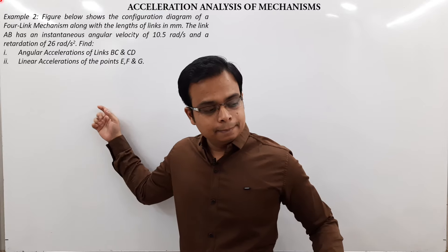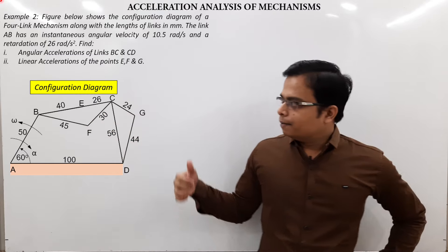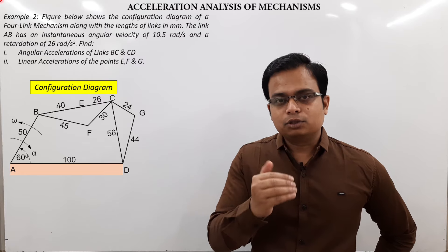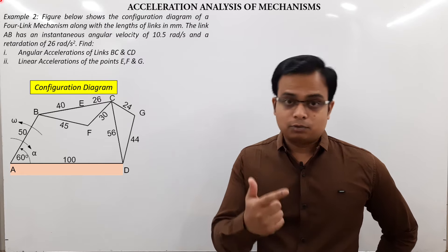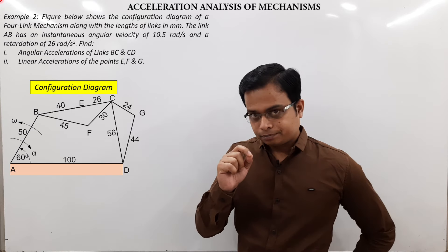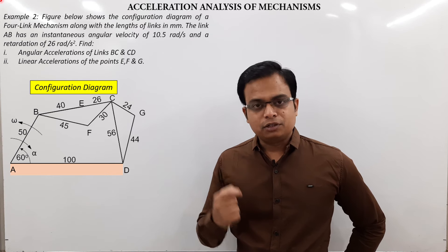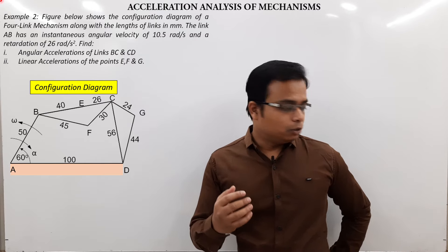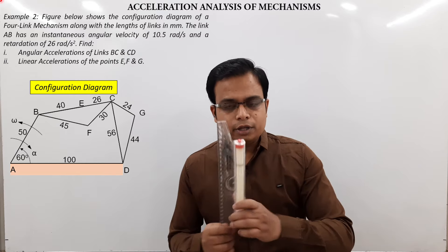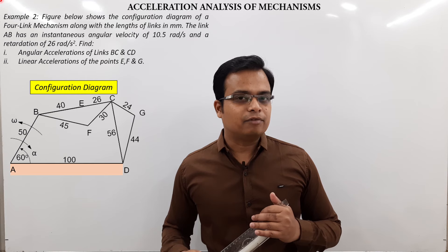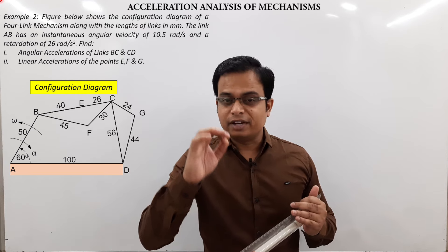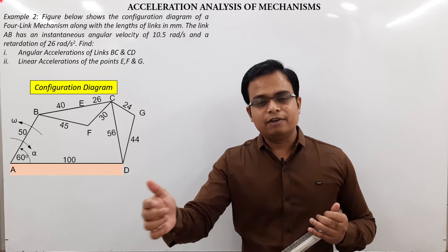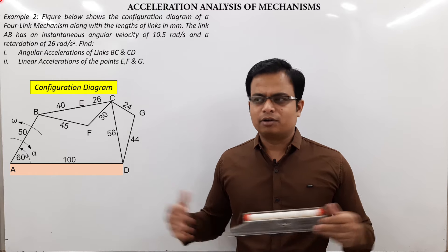The problem is based on a four-bar mechanism. Just take a look at this configuration diagram. For this configuration, we have already made the velocity diagram. If you haven't seen my videos on the relative velocity method, you must watch them. You'll need a piece of paper, pencil or pen, a compass, a protractor, and a roller scale or mini-drafter. It's going to be a very delicate and meticulous construction.